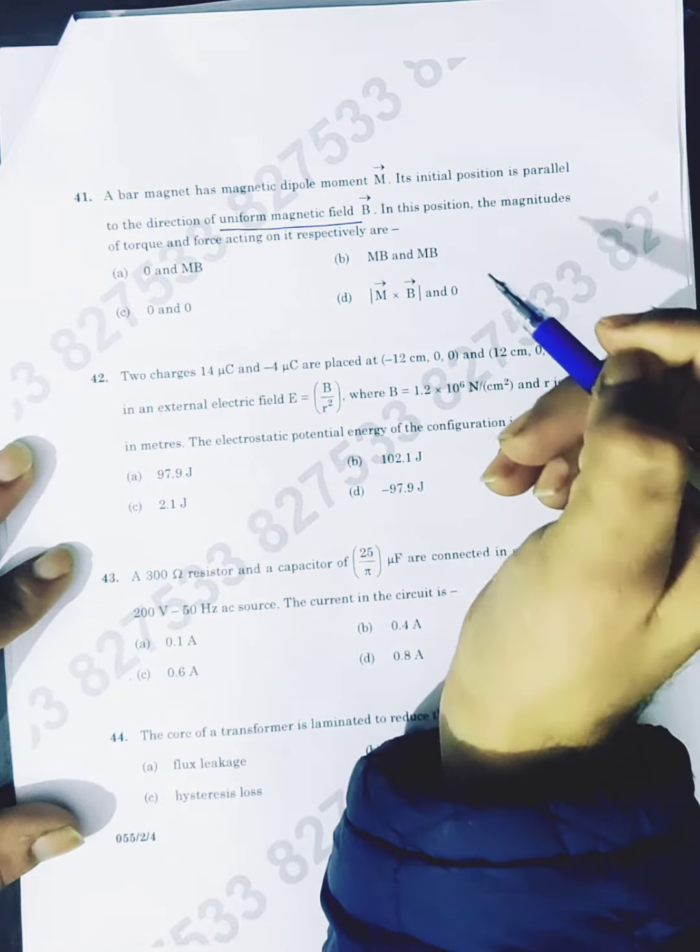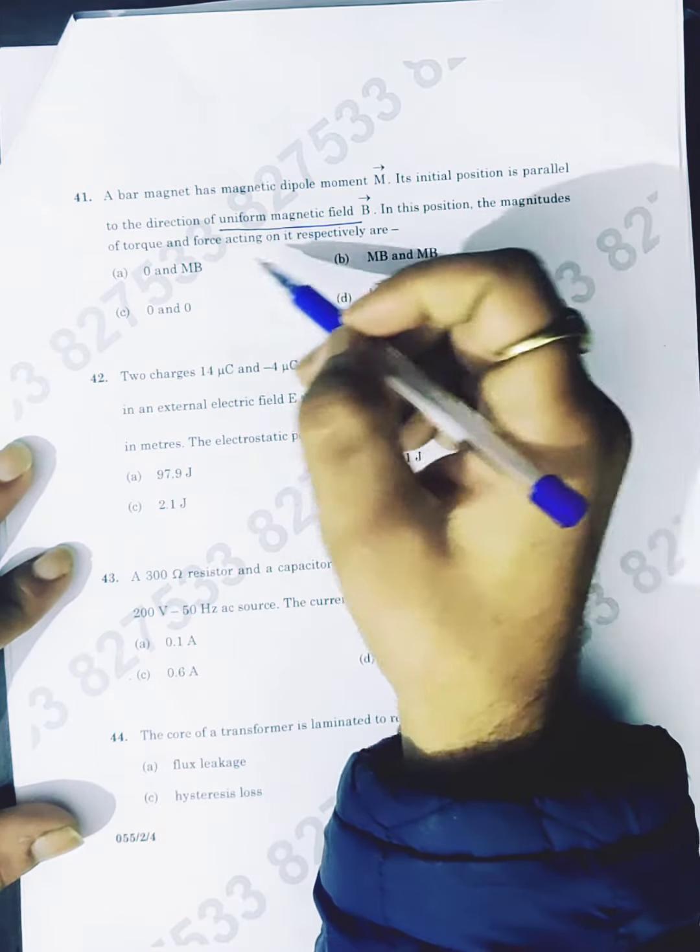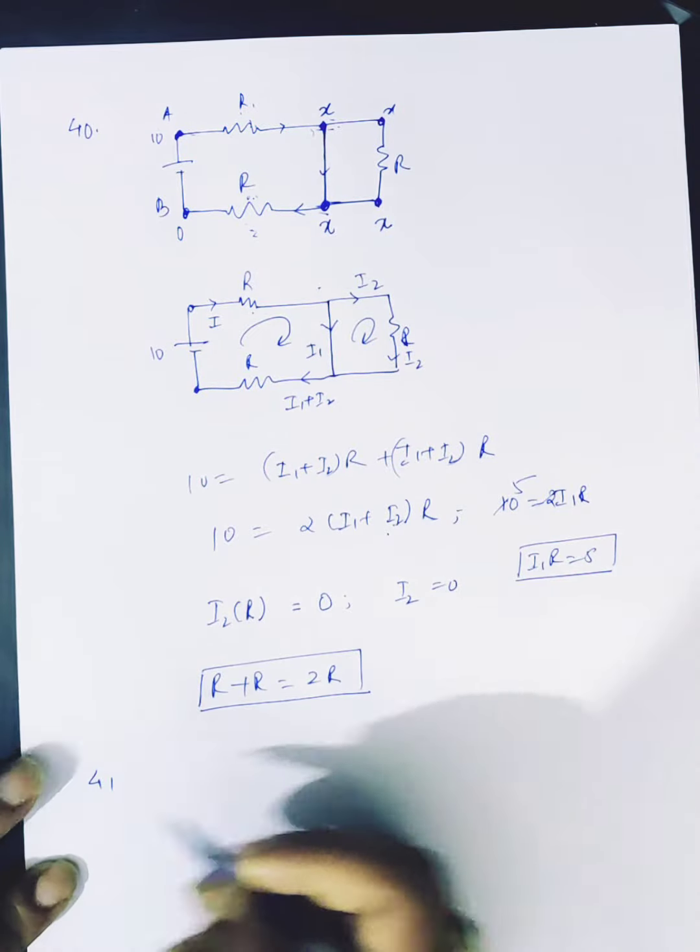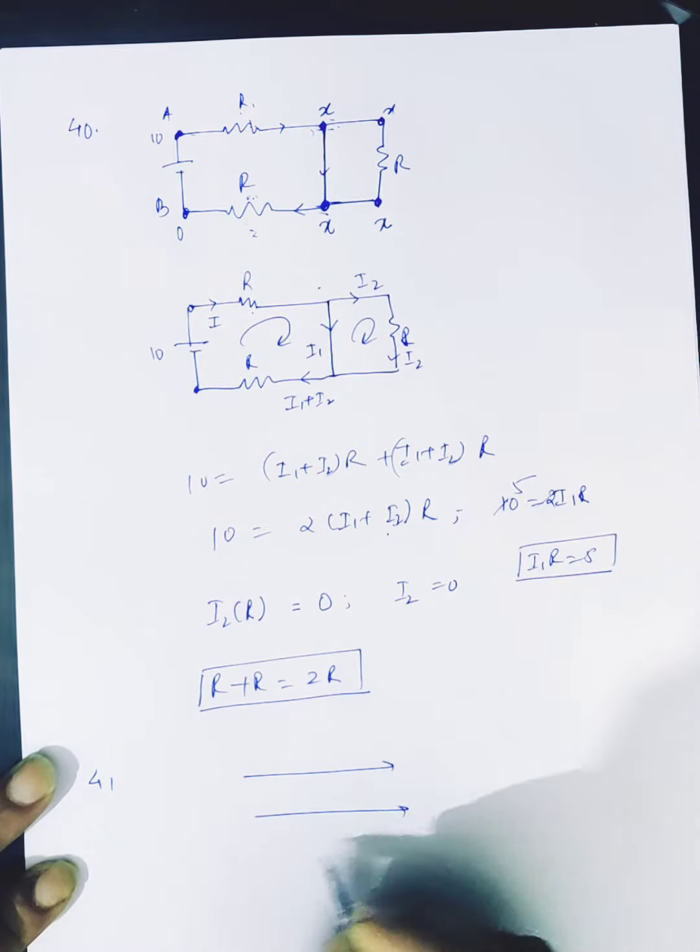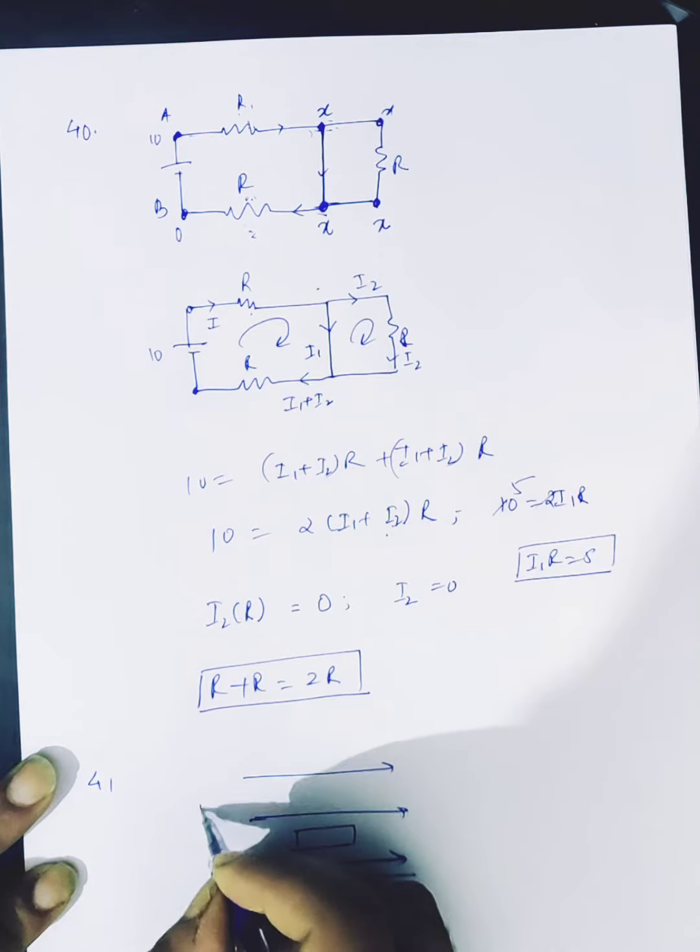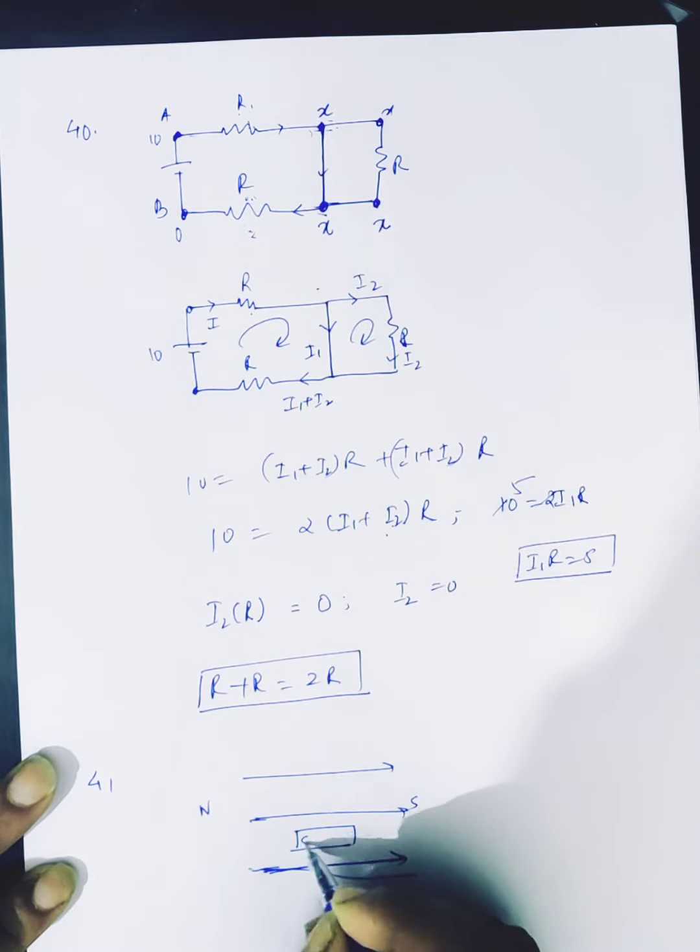Initially, in this position the magnitudes of torque and force acting on it are respectively. So for question 41, this magnetic field and this is a bar magnet which is placed like this, north to south field. Magnetic moment is south to north, so these are parallel.